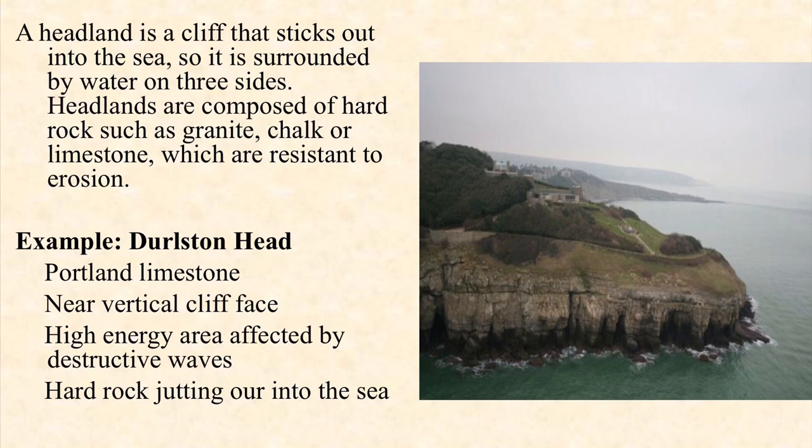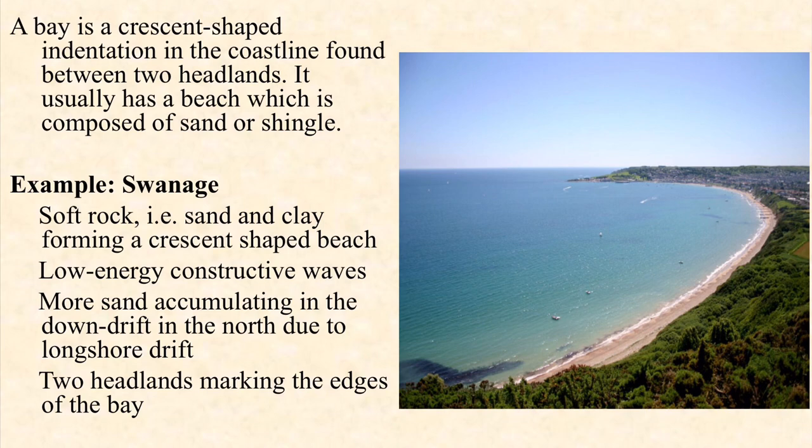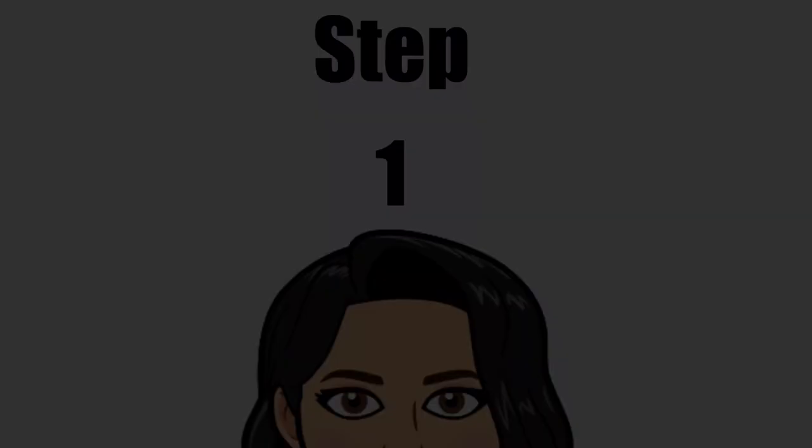On the other hand, a bay is a crescent-shaped indentation in the coastline, typically found between two headlands. This particular area of the coastline will be less resistant rock and is therefore more easily eroded by processes of erosion.